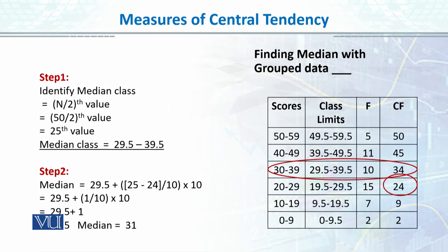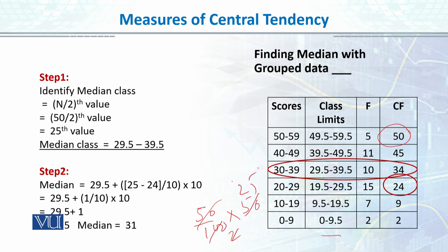Hum us mein median value nikalne ke liye: fifty divided by hundred into fifty, which is twenty-five. So twenty-five mein dekhna hai ke woh kis class ke andar lay karai. I will go to the cumulative frequency column and find out ke yeh twenty-five ki value kahan pe lay karri hai — remember, twenty-five is a rank, a position. So twenty-five falls in this class, which is our modal class.